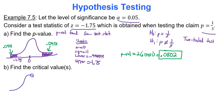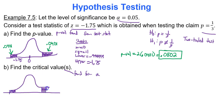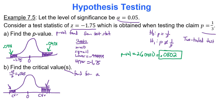Now let's find the critical values. Since it's a two-tailed test, you will have two critical values. Critical values are found from alpha. Shade your left tail and shade your right tail — you're looking for a positive critical value and a negative critical value. If alpha is 0.05, divided amongst two regions, that's 0.05 divided by 2, which equals 0.025 in each tail.